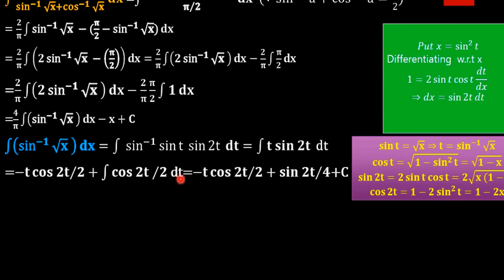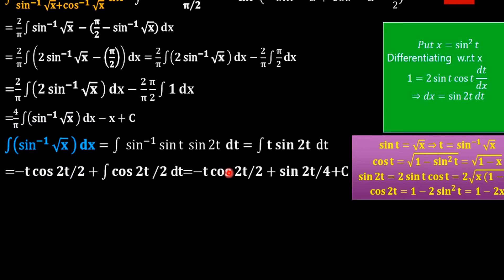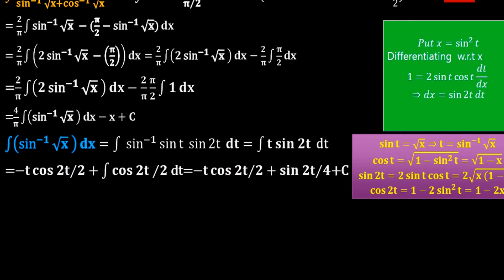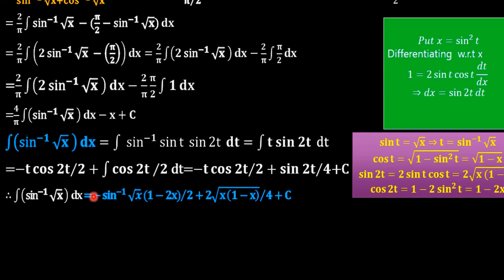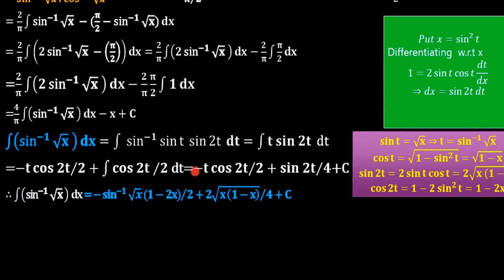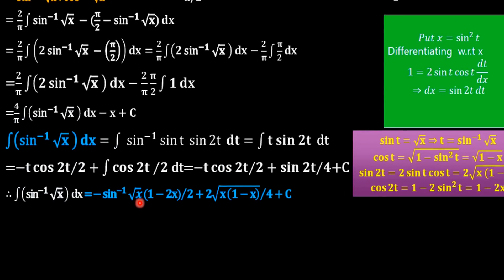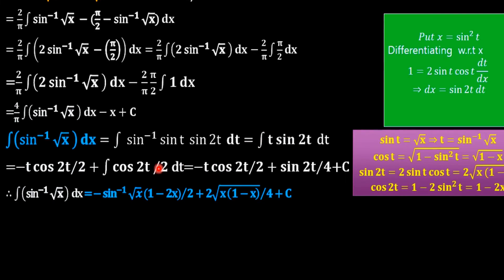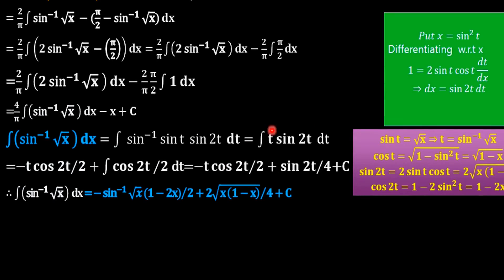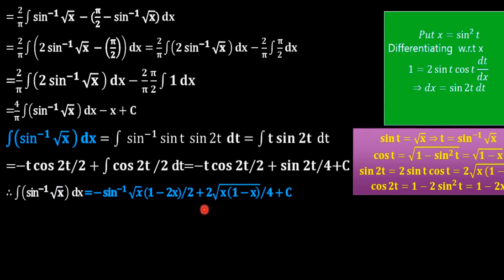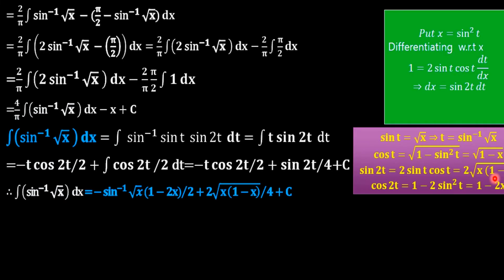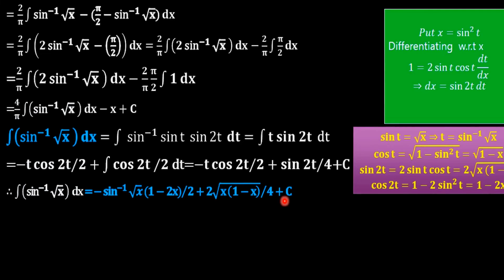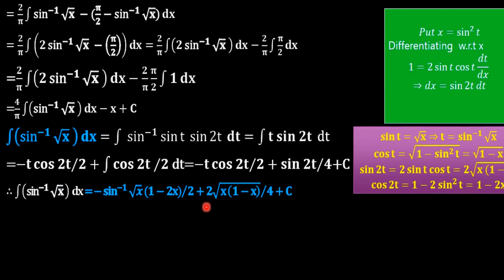Substituting these values: t is sin inverse of root x, cos 2t is 1 minus 2x, and sin 2t is 2 root of x times 1 minus x. So the integral equals sin inverse of root x times 1 minus 2x divided by 2, plus 2 root of x(1-x) divided by 4. Cancelling 4 and 2, we get the result with a factor of 2 in the denominator.